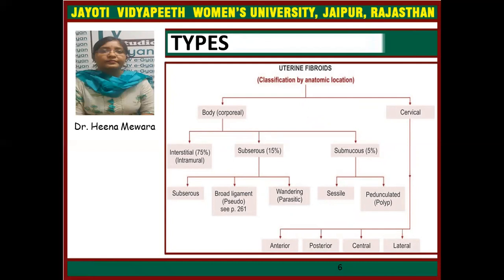Interstitial fibroid is found in 75% of cases, subserous in 15%, and submucous in 5% of cases. Subserous fibroid is further divided into broad ligament (pseudofibroid) and wandering (parasitic fibroid). Submucous fibroids are of two types: sessile and pedunculated. Cervical fibroids are of four types depending on location: anterior, posterior, central, and lateral cervical fibroid.